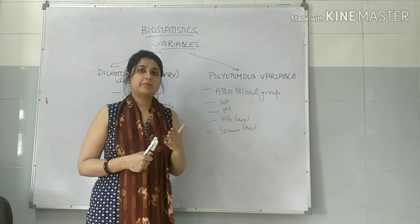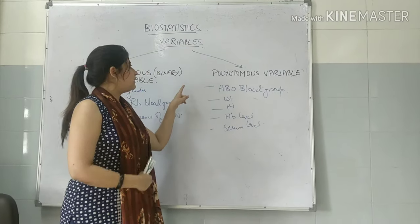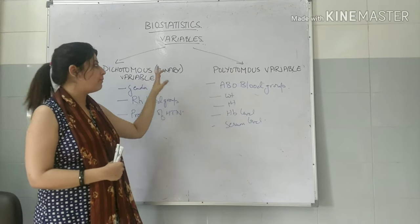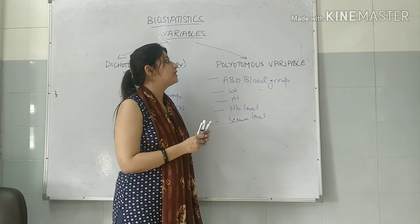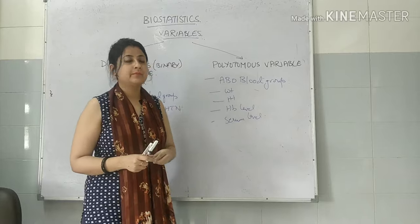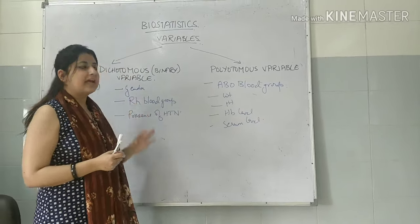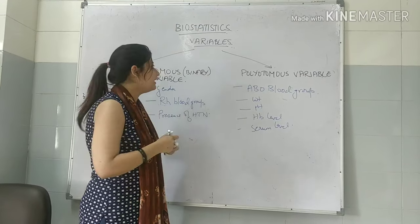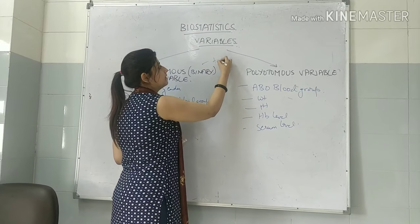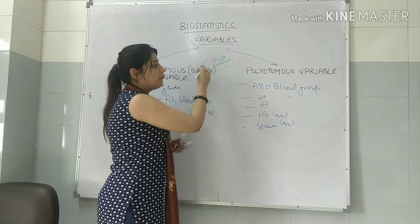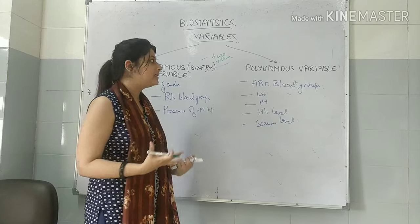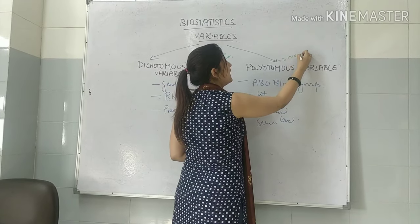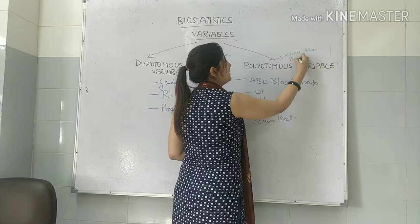Our next classification of variables divides them into two types: dichotomous (or binary) variable and polytomous variable. Dichotomous means that a variable can take up only two values, and polytomous means that a variable can take up more than two values.